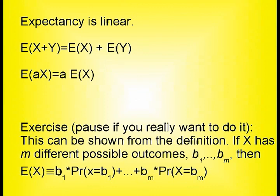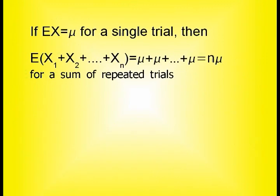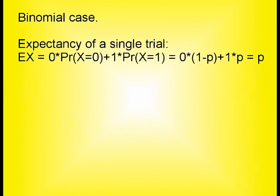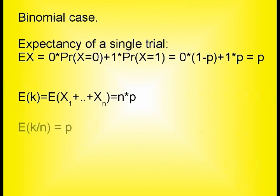And here's a nice exercise. If the expectancy of a single outcome is μ, then the expectancy of a sum of n repeated trials will be n times μ. And the expectancy of an average will be the expectancy of a sum divided by n, which is simply the expectancy of a single outcome μ. Let's apply this to the binomial case. By the definition, we have a probability p for success and 1 minus p for failure. So the expectancy will be p, as seen here. That means that the expected number of successes will be n times p, and that the expected observed rate will be p, the theoretical rate.